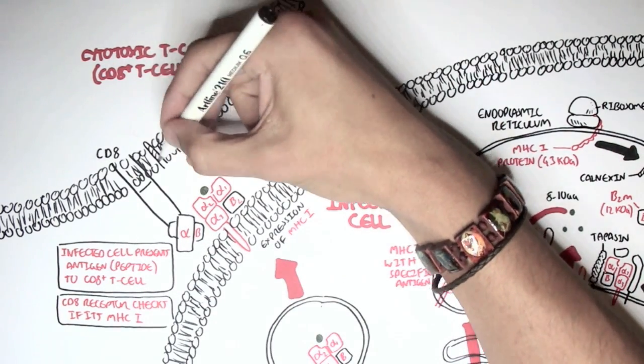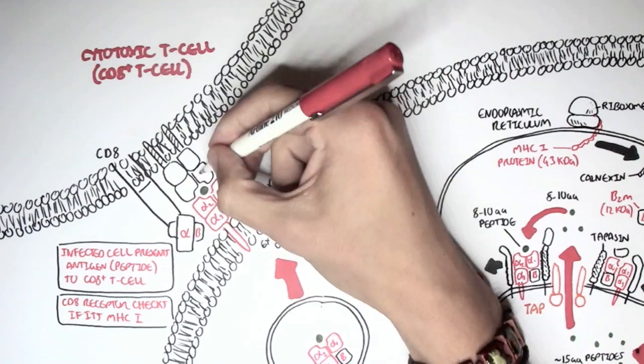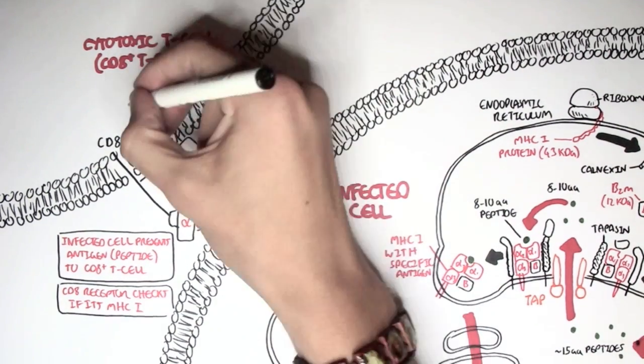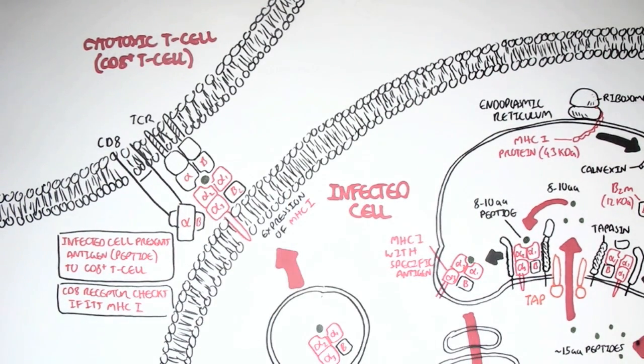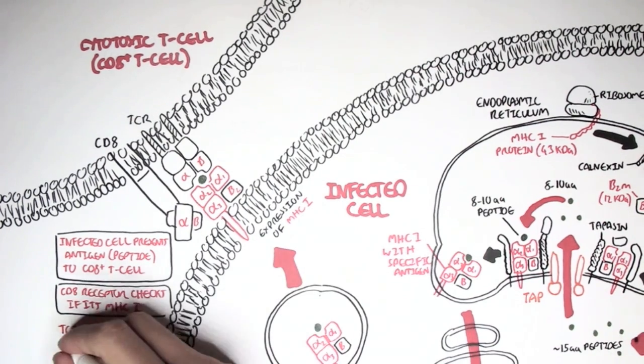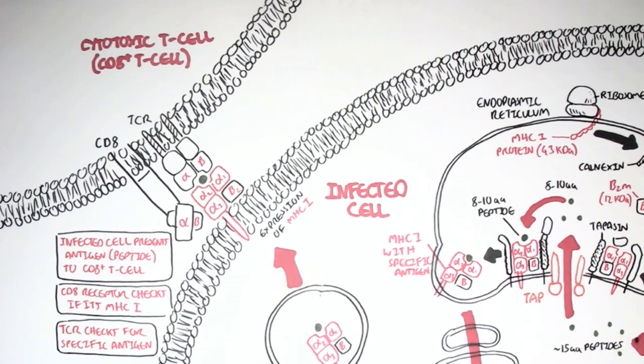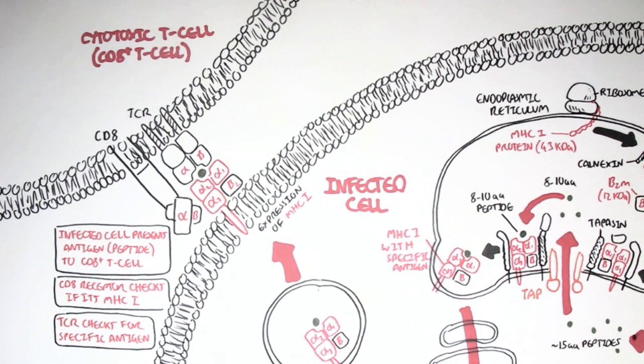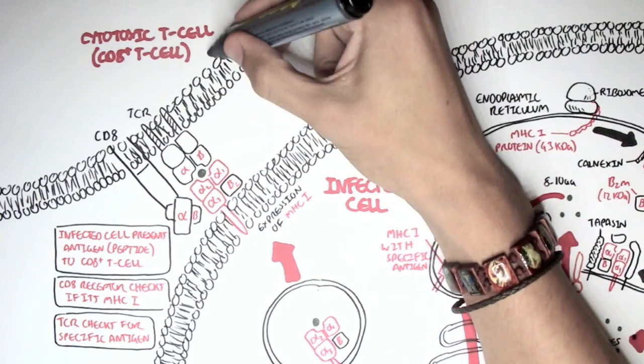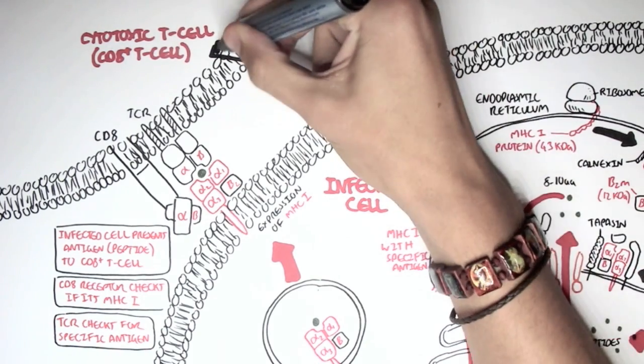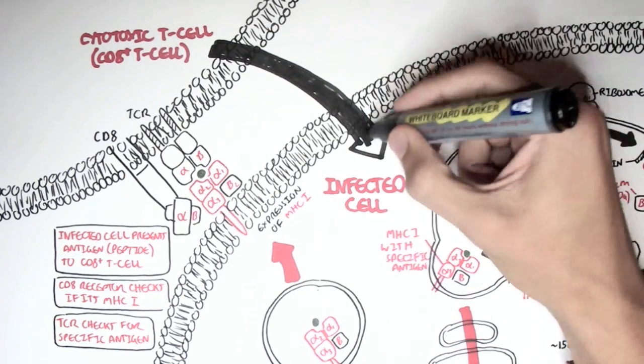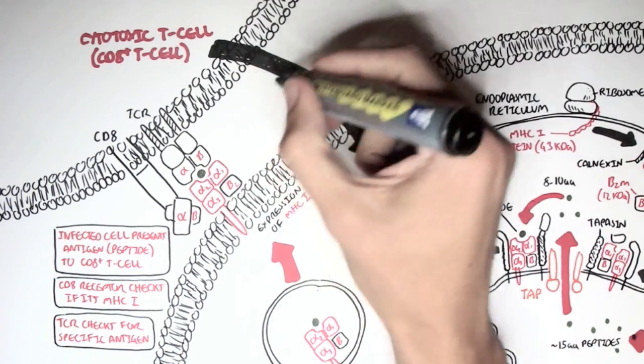And then, the CD8 T cell has another receptor, the T cell receptor. The T cell receptor's role is to check the antigen, because the T cell receptor only fits to a specific antigen, the peptide, just like the MHC molecule. So if both are okay, if the CD8 recognizes the MHC as MHC class 1, and if the TCR fits to the specific antigen being presented, the cytotoxic T cell can then release chemicals, cytokines, that will essentially kill this infected cell.